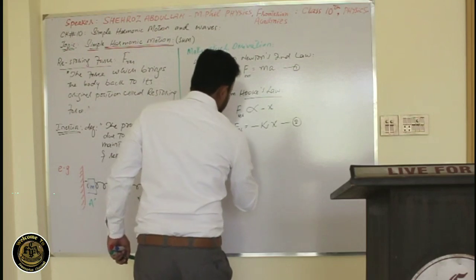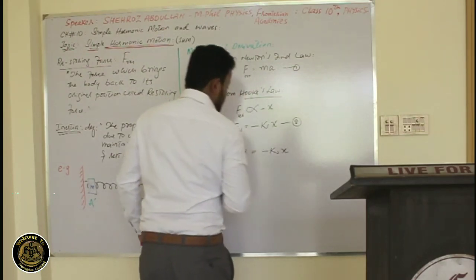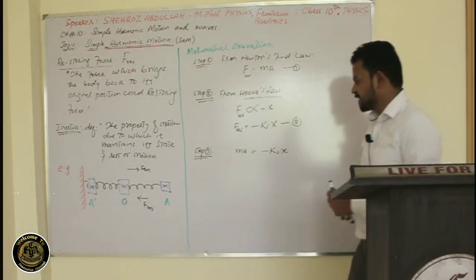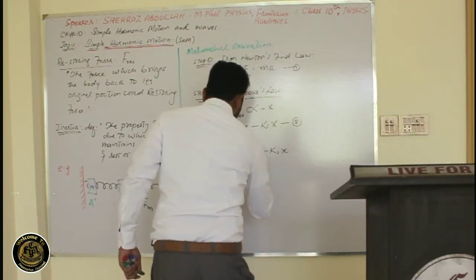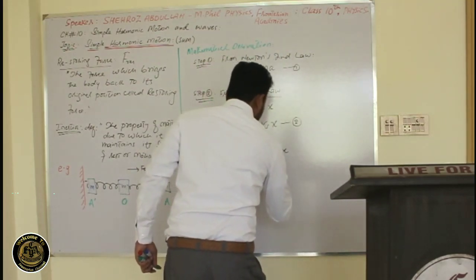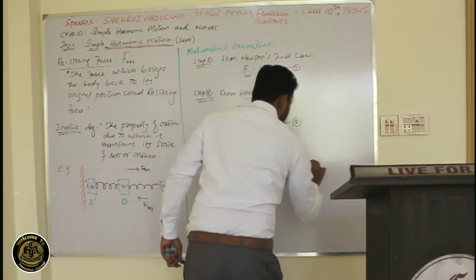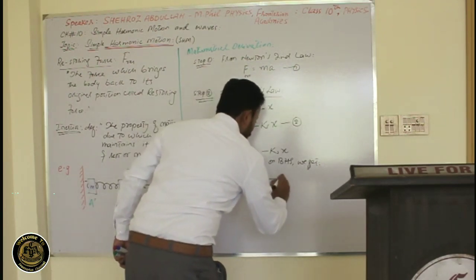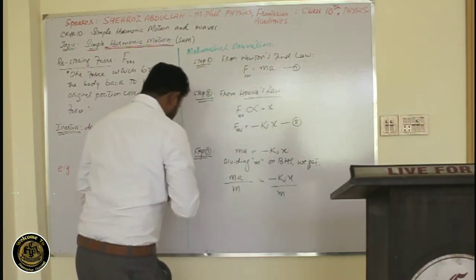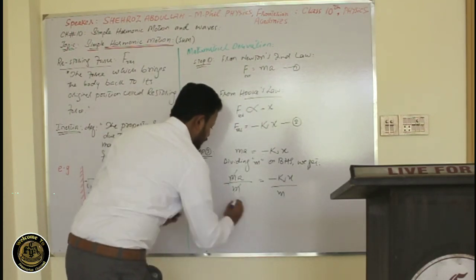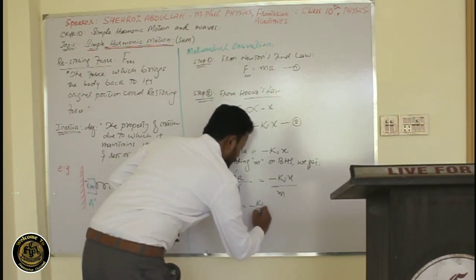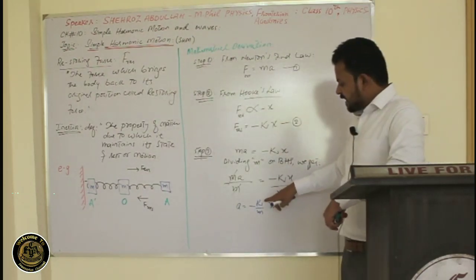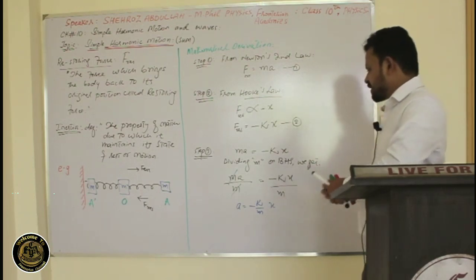Step three: MA equals minus KX. Dividing both sides by M, we get A equals minus K over M times X. Here K is the spring constant, and this gives us the acceleration as directly proportional to displacement, confirming Simple Harmonic Motion.